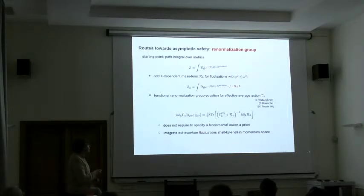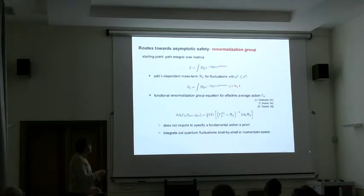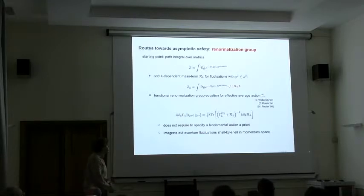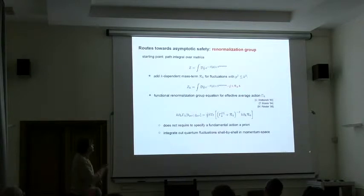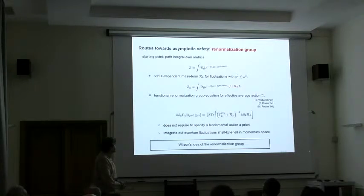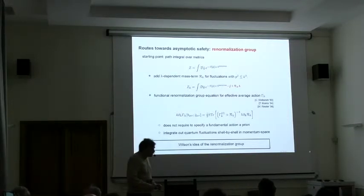One should appreciate that this equation is far better behaved than the actual path integral that we started out with. On the left hand side, we only get contributions from small momentum shells in fluctuations. We are dealing with a finite quantity here. The flow is well defined. Also, fundamental actions appear as initial conditions. We don't need to specify this S that appears up here a priori. In this case, when we do this modification to the path integral, we integrate out quantum fluctuations shell by shell. In this way, we realize Wilsonian renormalization group flows.